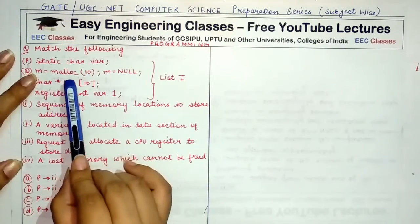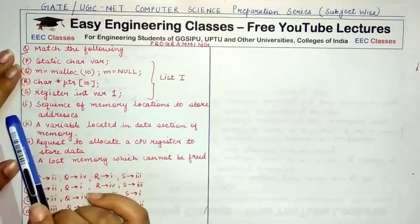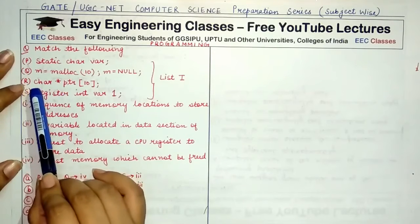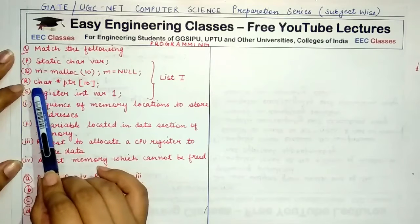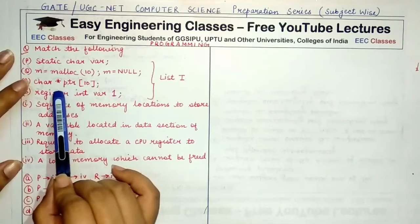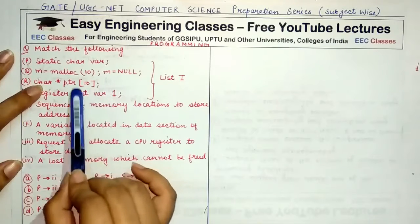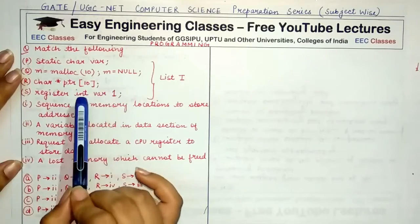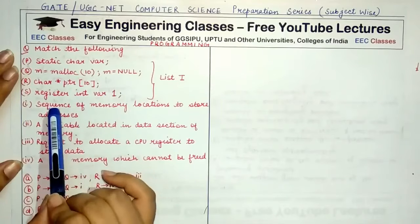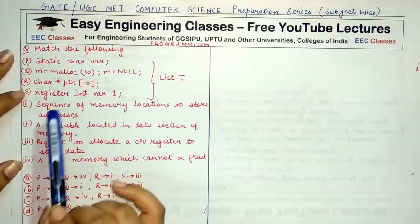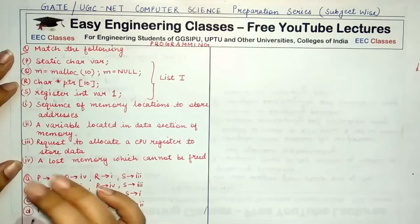Option R, char* ptr[10], is declaring an array of 10 pointers to characters. It can also be described as a character array of 10 pointers — each location in the array is a pointer pointing to a character value.